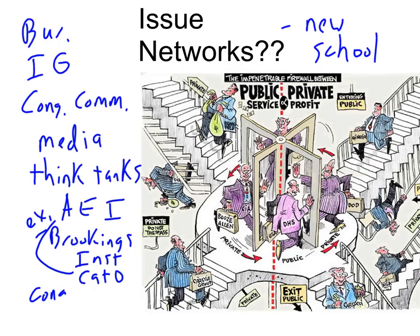Congressional staffers are also part of an issue network, and there's some controversy to this because these people are not elected. We elected our congressmen — we didn't elect the staffers — yet they often know more than the actual congressmen do, so they are able to do a lot of legwork for Congress. Issue networks just include more people and more institutions, but do the same thing as the Iron Triangle, which is make policy.